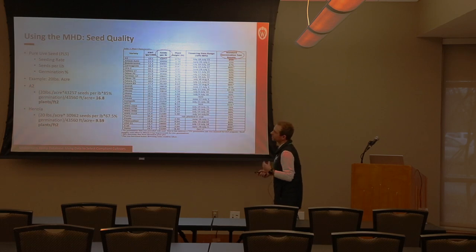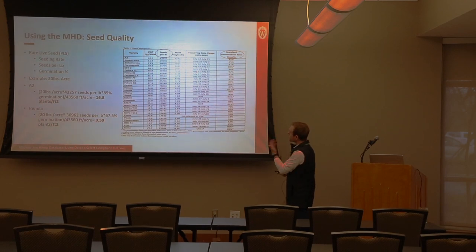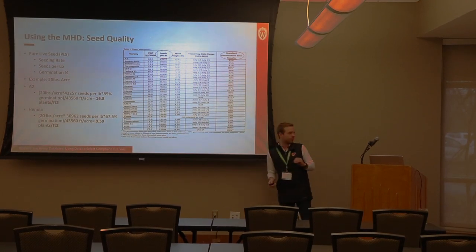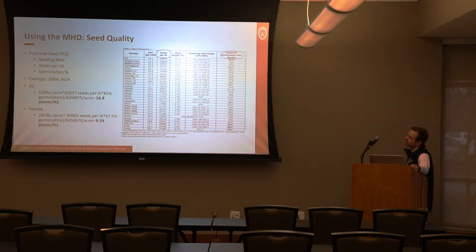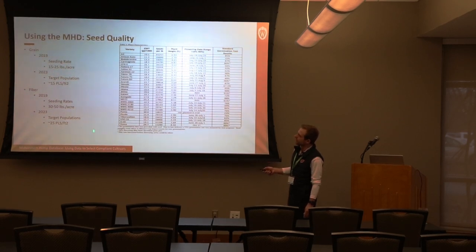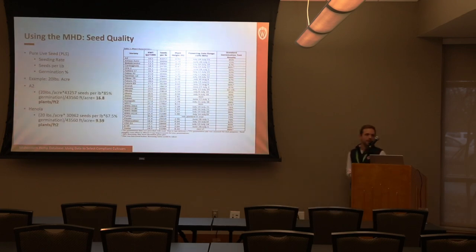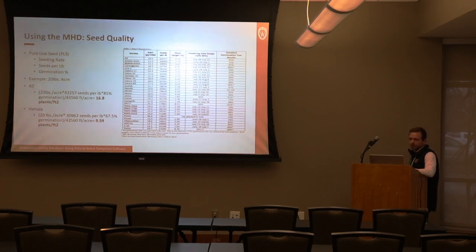This difference matters — especially when doubling or tripling seeding rates. Some seed lots show only 25 percent germination, which is not ideal. The advantage of using PLS is that it allows you to account for poor seed quality: even if germination is low, you can increase the seeding rate to accurately achieve your targeted plant population. The mindset has shifted from pounds per acre to pure live seed — how many plants per square foot should we be achieving — for both grain and fiber systems. All this data including germination rates and seeds per pound is available on the hemp database.